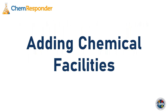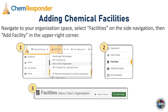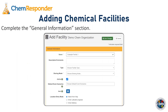We'll start with how we add chemical facilities to a ChemResponder organization. All chemical facilities are added in the organization space of the ChemResponder website, so it can only be done from the web application — not from the mobile application. To get to the facilities page where you can start adding facilities, you'll navigate to your organization space, select Facilities on the side navigation, and then click Add Facility in the upper right corner.